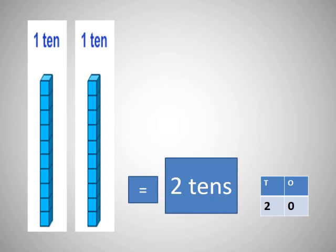Now, here you can see one ten and one ten. So, count it — it is one plus one, two. It is two tens. So, how many? Twenty. Two tens and zero ones.